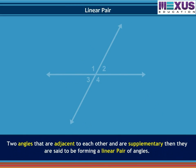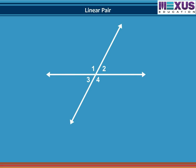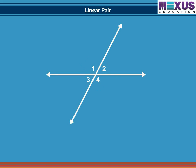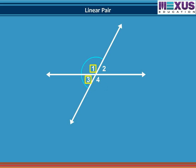Two angles that are adjacent to each other and are supplementary are said to be forming a linear pair of angles. In this figure, two lines intersecting each other form a linear pair of angles. Angle 1 and angle 2 form a linear pair. Angle 2 and angle 4 form a linear pair. Similarly, angle 3 and angle 4, and angle 3 and angle 1, also form a linear pair of angles.